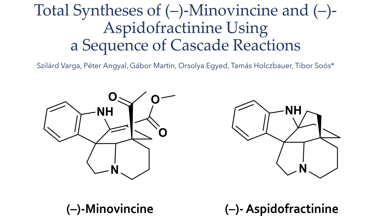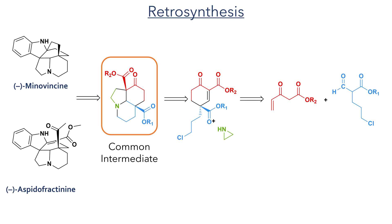As we will see, this was accomplished with great success. So first, let's look at the retrosynthesis. The retrosynthesis for both minovinsine and aspedofractanine led to a tricyclic intermediate common to both molecules. This intermediate could be derived from a functionalised cyclohexanone via a sequence of nucleophilic additions to construct the framework. Simple aldol chemistry could be employed to synthesise the cyclohexanone using a chiral catalyst to introduce a single stereocentre which would function to guide the stereochemistry for the rest of the synthesis.